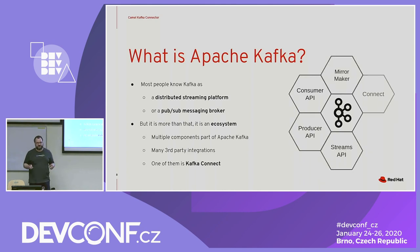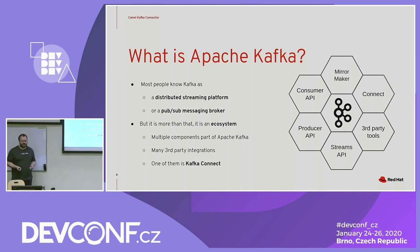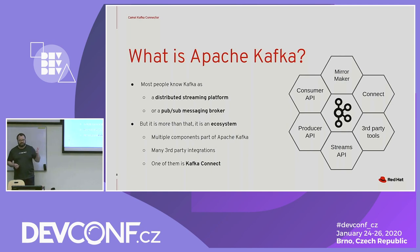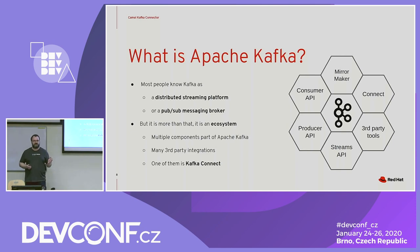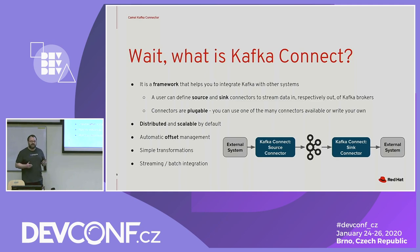The broker is of course at the center of it, but there are different consumer, producer, and streaming APIs. There's the Mirror Maker, and today Mirror Maker 2 as well. There's a lot of third-party integrations if you use Spark or different frameworks — many of them have Kafka support built directly in. One of the components which are part of this ecosystem is Kafka Connect.